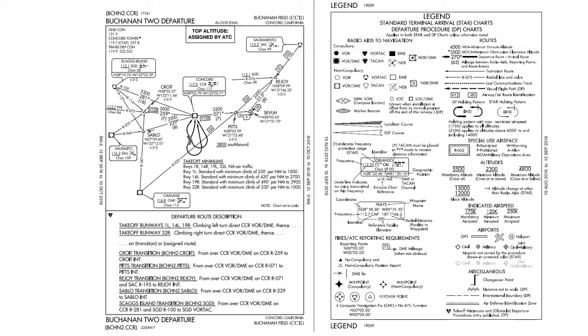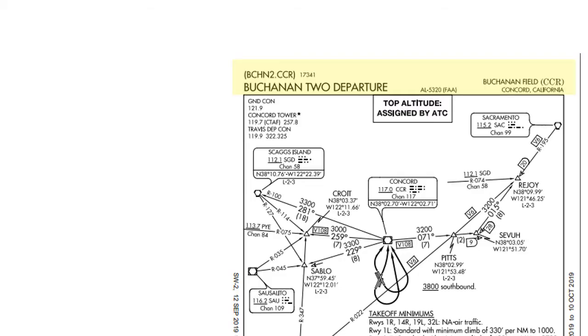As you do your homework, make sure that you have the appropriate legend out. I've extracted the page on SIDs and STARs from the chart users guide and uploaded it into the content for you. We'll start by looking at the header information. Here the pilot makes sure that they have the correct SID in front of them. This one starts at Buchanan Field and the main transition is to CCR, the Concord VOR. Note the important frequencies are also right under the title.